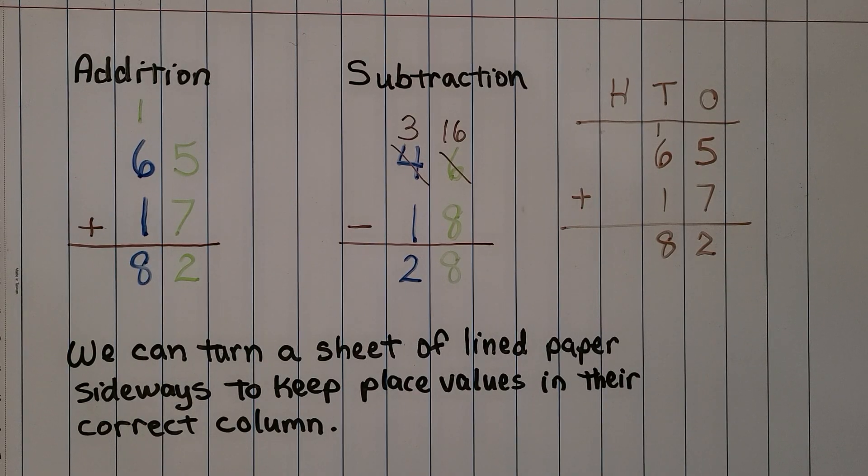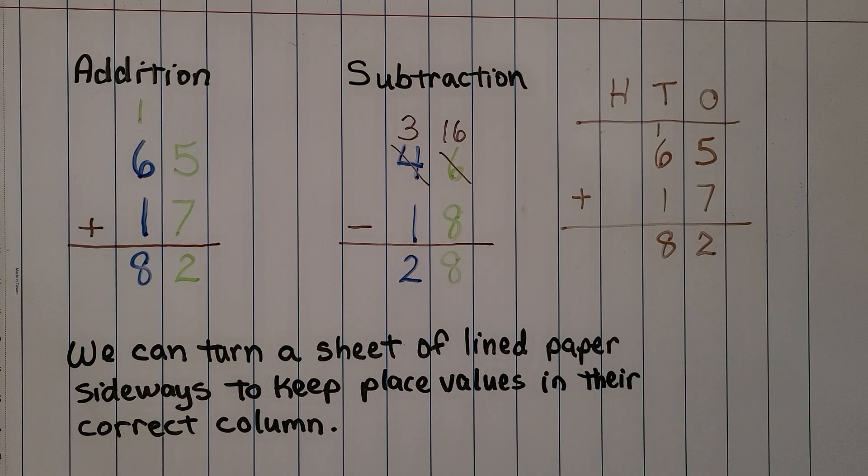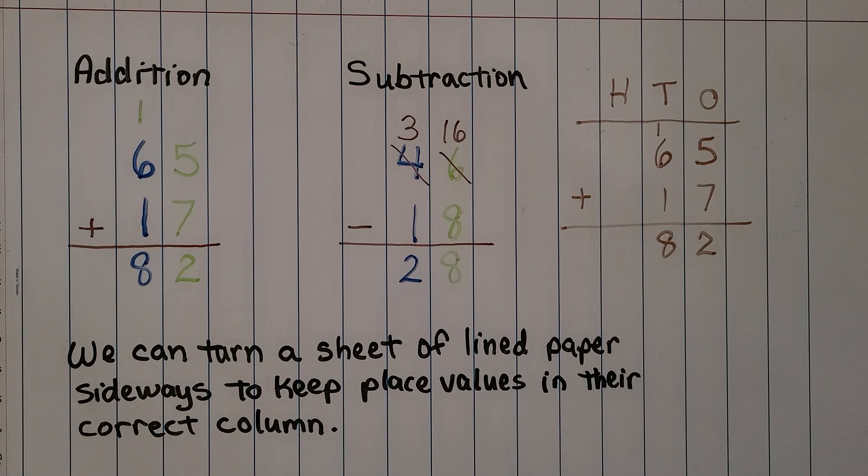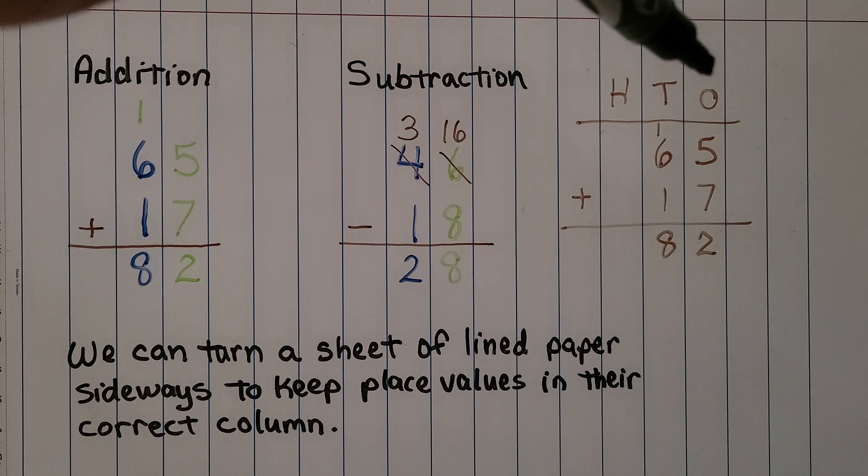And remember we can turn a sheet of lined paper sideways to keep place values in the correct column. You don't need to write the whole words hundreds, tens, ones. You can just write an H for 100, T for 10, and an O for ones.